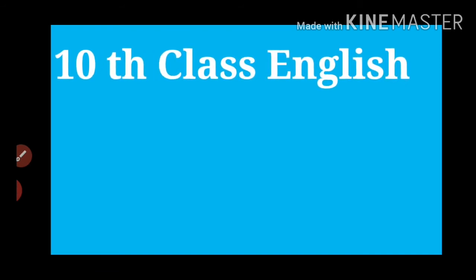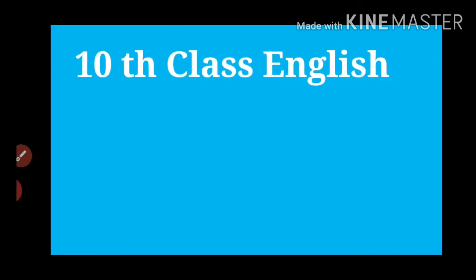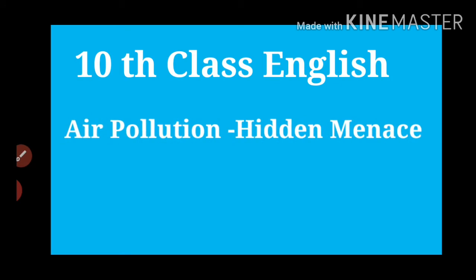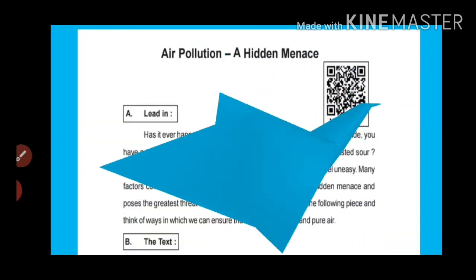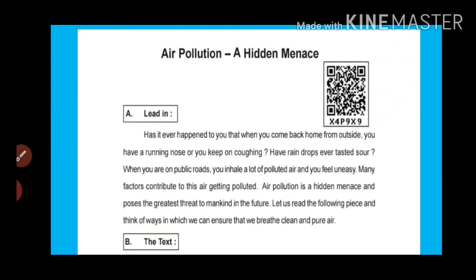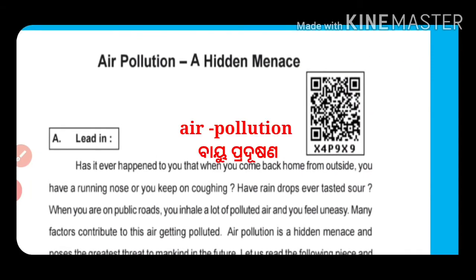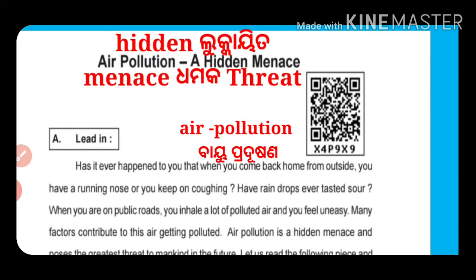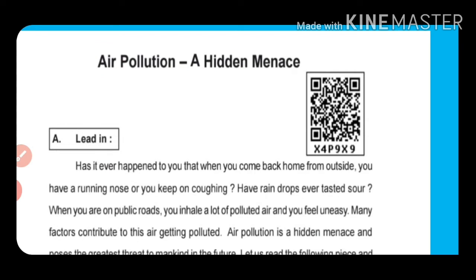Good morning students. Welcome back to 10th class English. The name of the prose is air pollution. You know, air means bayou, pollution. Now let's move to the text reading. Air pollution — that is a hidden manak. Air pollution: a hidden manak. Look at the threat or dhamak.